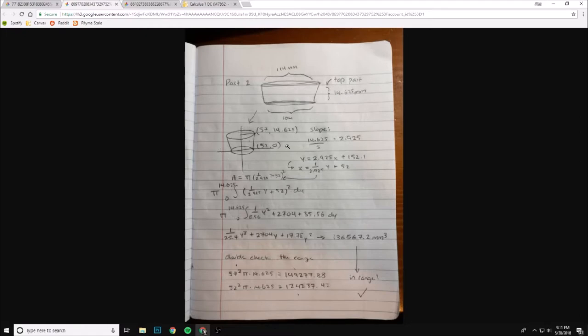So if we put this on a graph, you can notice that the radius would be half of this, the radius of this would be half of this and the top would start at 14.625 since that's the height and the bottom would start at zero. From this, we can calculate the slope and the function of this line right here.